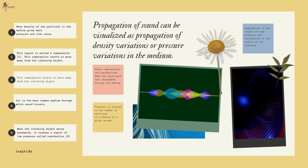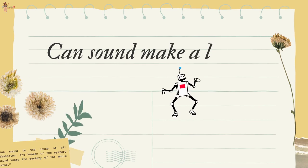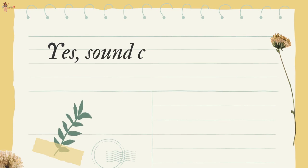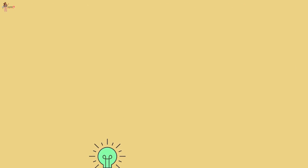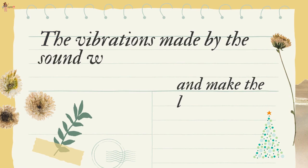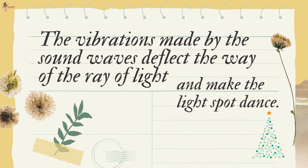Propagation of sound can be visualized as propagation of density variations or pressure variations in the medium. Sound can also make a light spot dance — the vibrations made by the sound waves deflect the path of the ray of light and make the light spot dance.